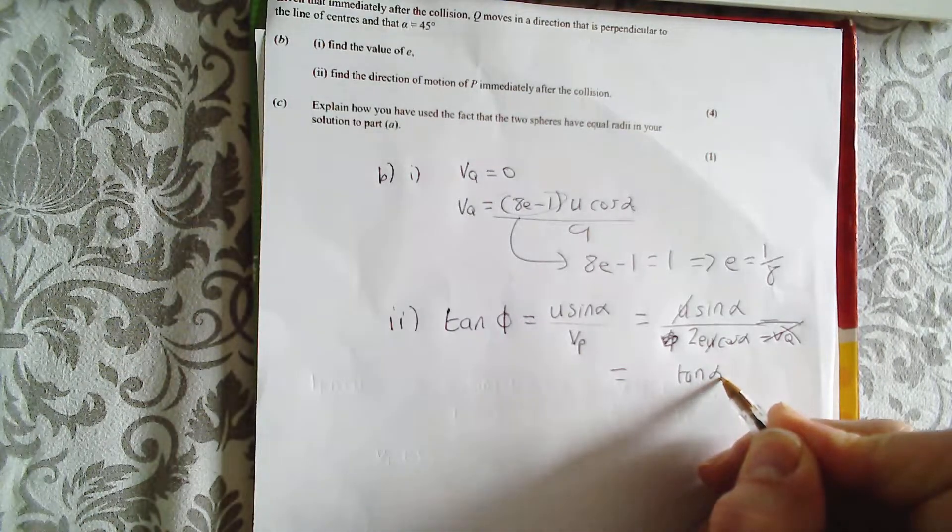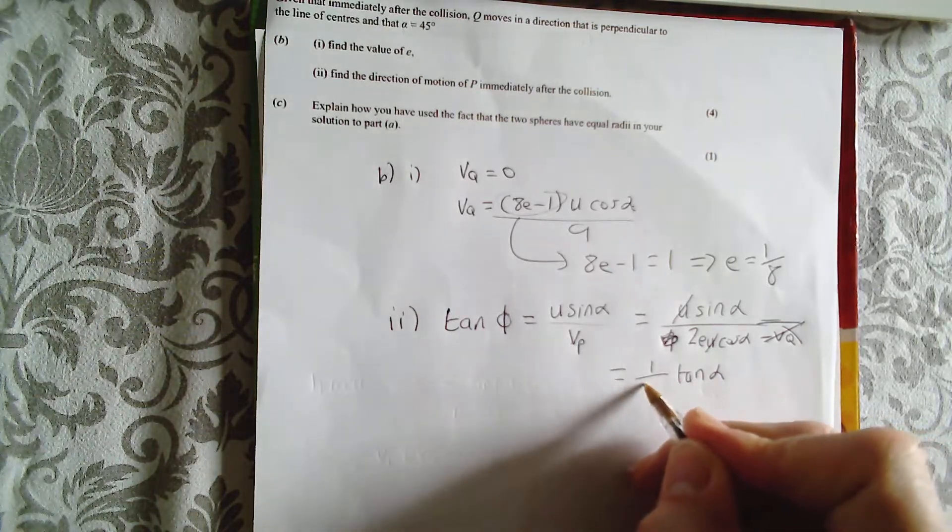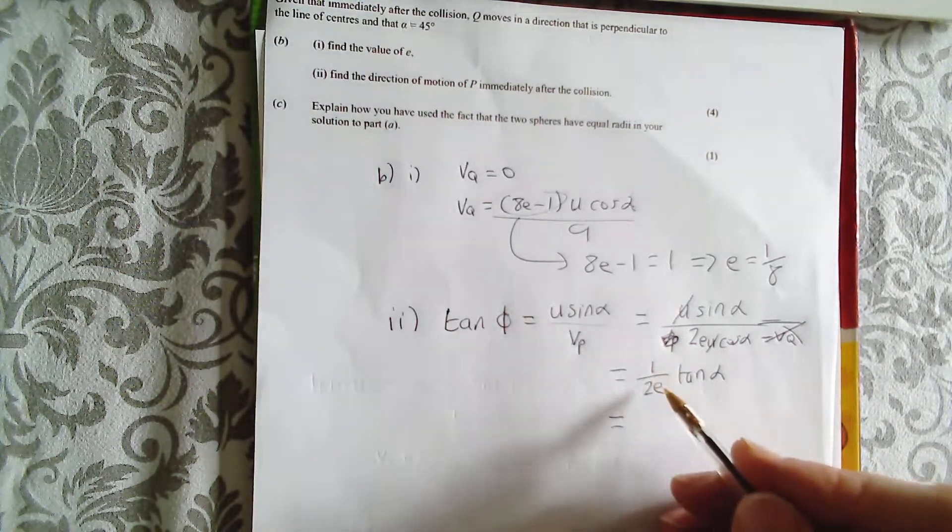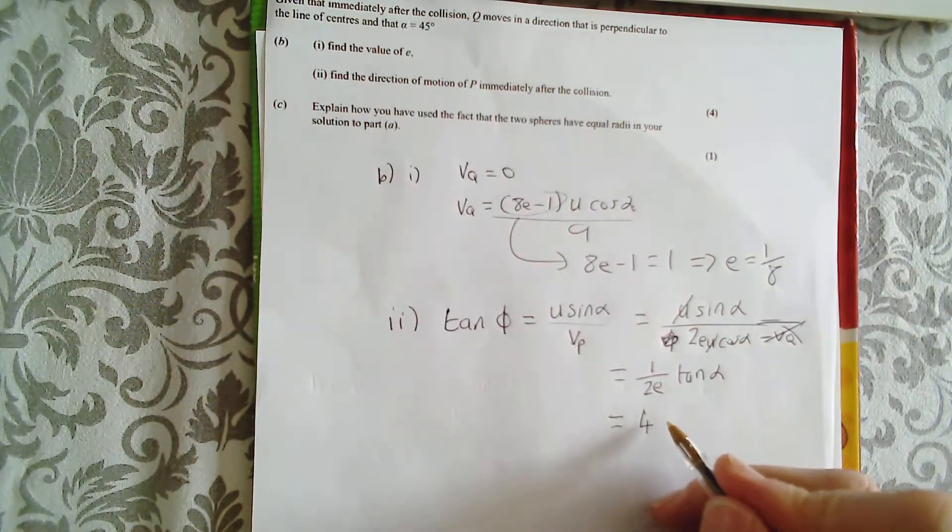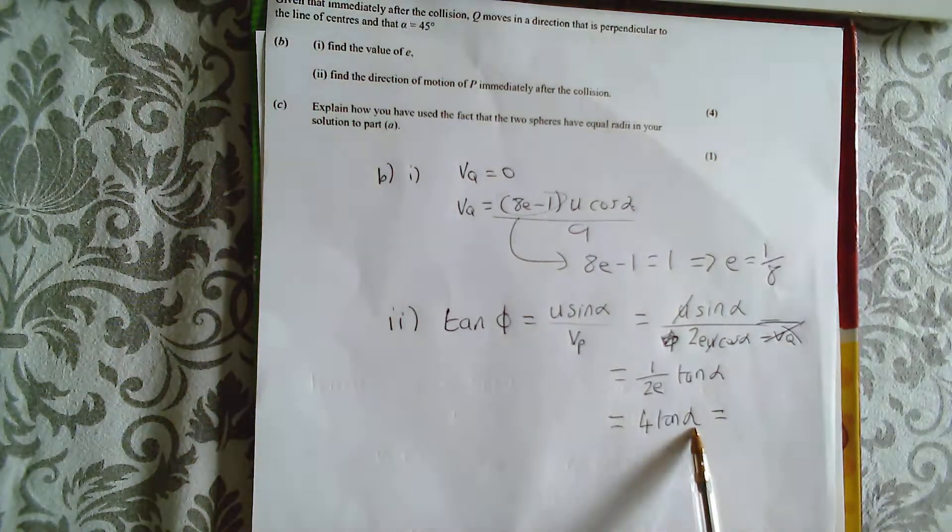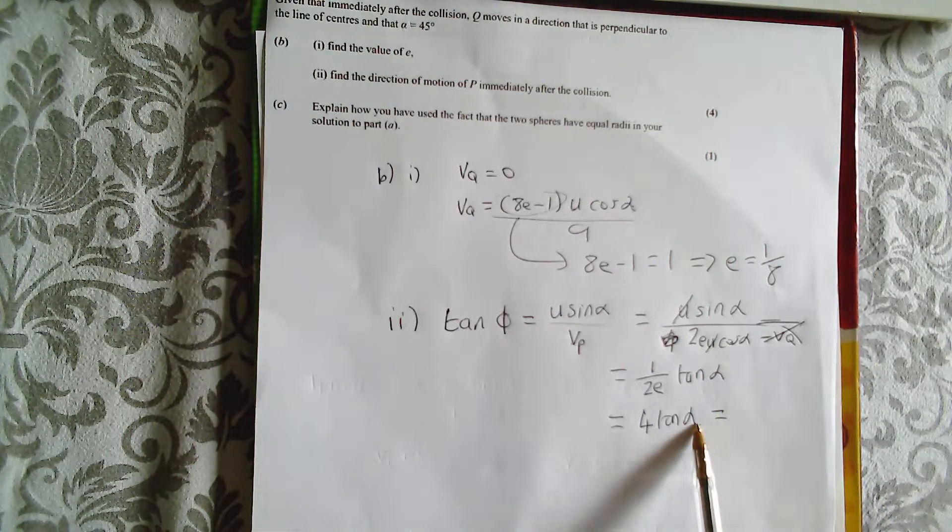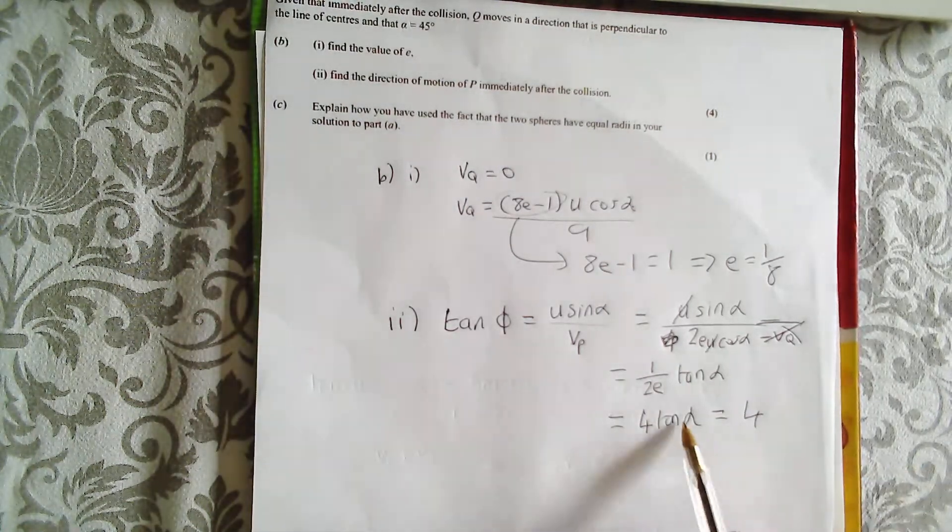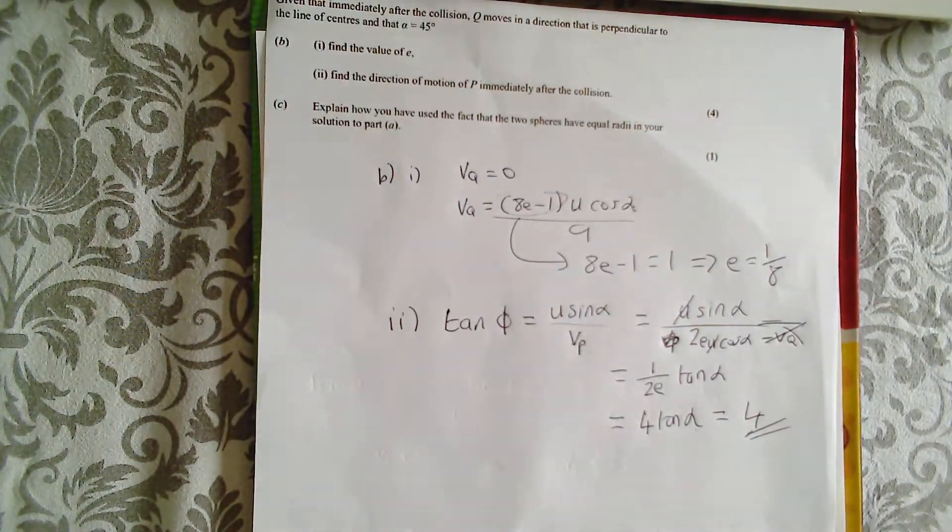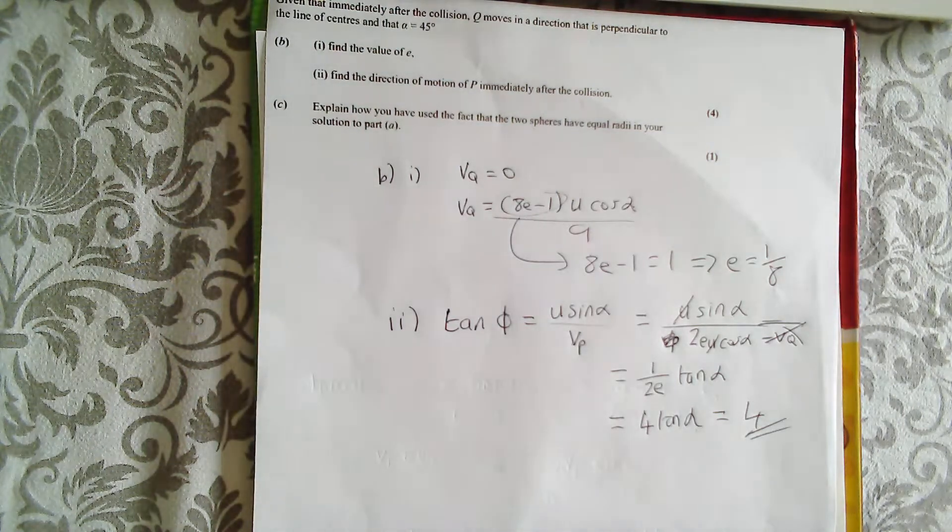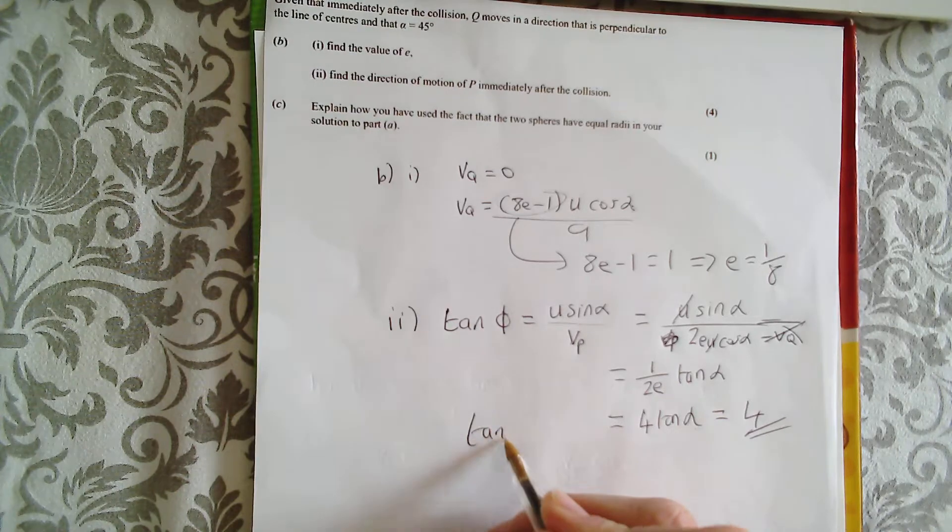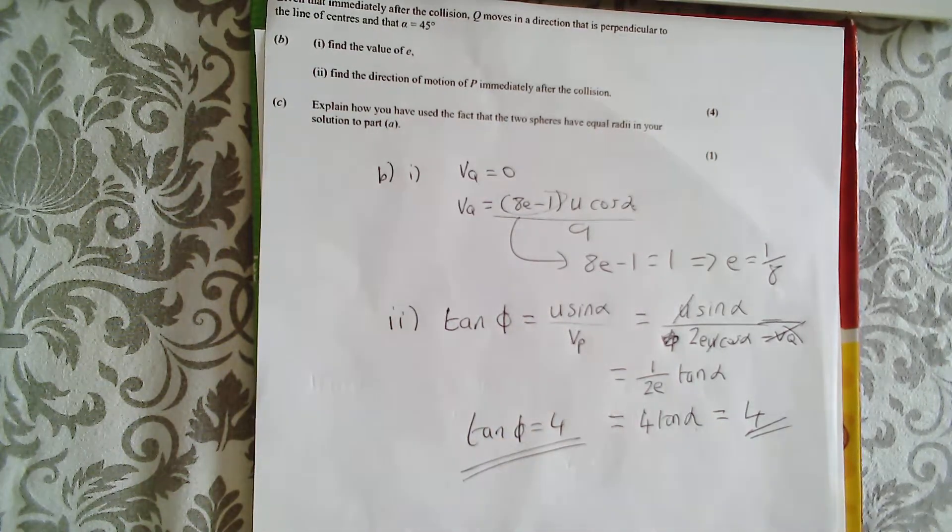Tan alpha, and I've got 1 over 2E. Well, what is E? What is E? E is an eighth, so 1 over 2, 1 over a quarter is 4, so I've got 4 tan alpha. Oh, well, what is 4 tan alpha? 4 tan alpha is got to be 4. Why is that? Because alpha is giving us 45 degrees. Tan and 45 is famously 1, so there you go. Now, so that just gives us that tan equals 4, and that's going to give you enough information to get the direction.